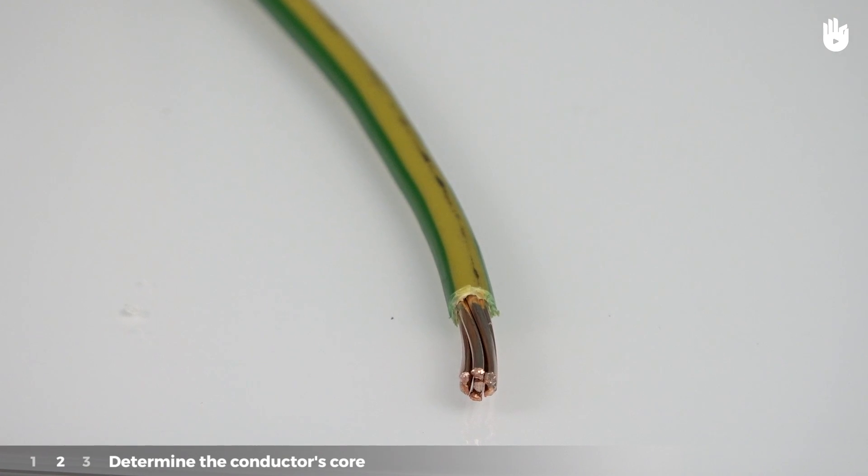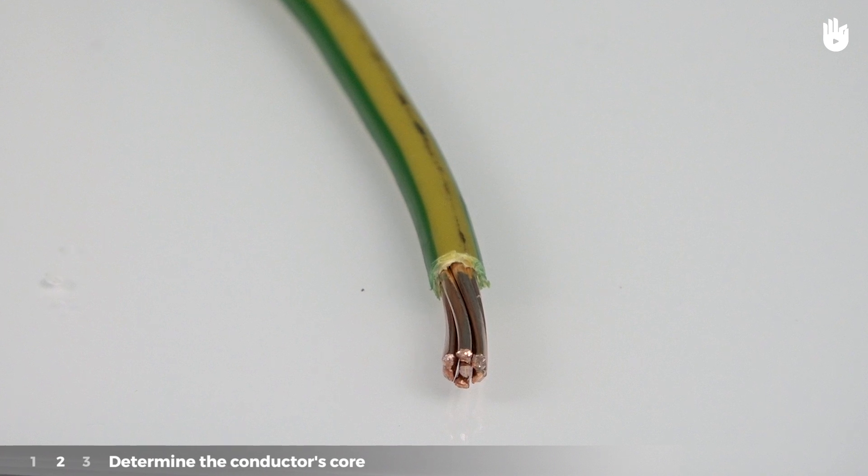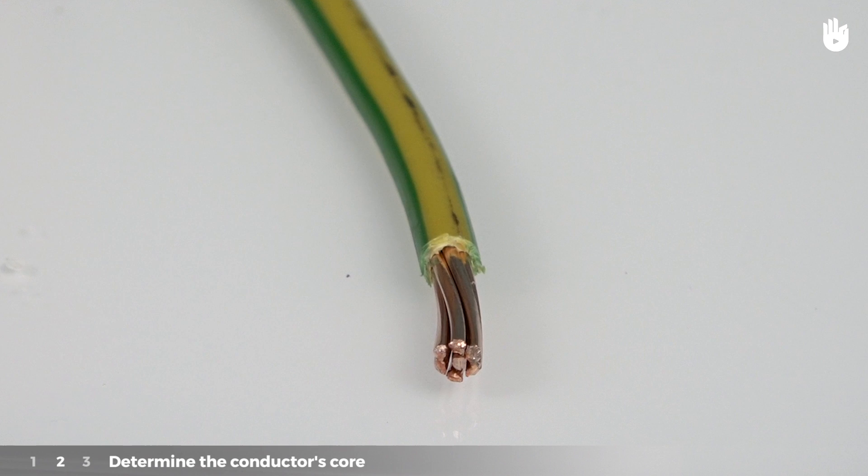Step 2: Determine the conductor's core. The conductor's core designates its general constitution. In residential systems, the norms require copper conductors. These have the advantage of being less resistant to current flow.